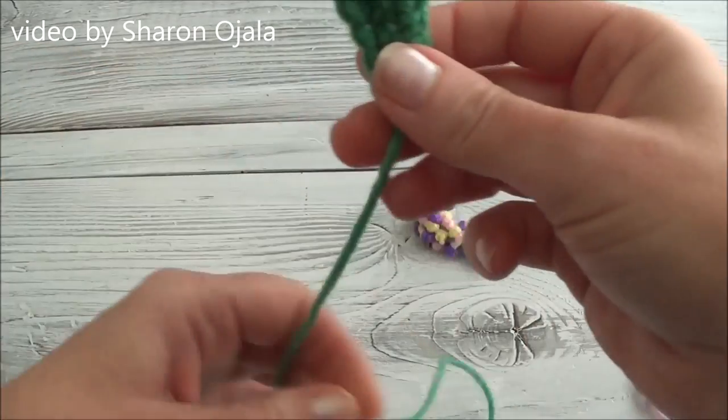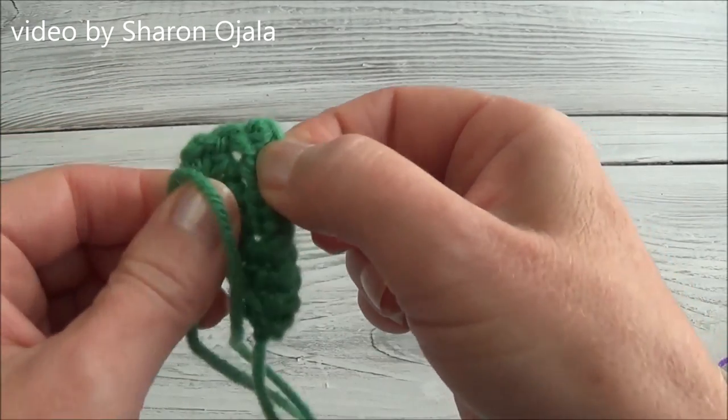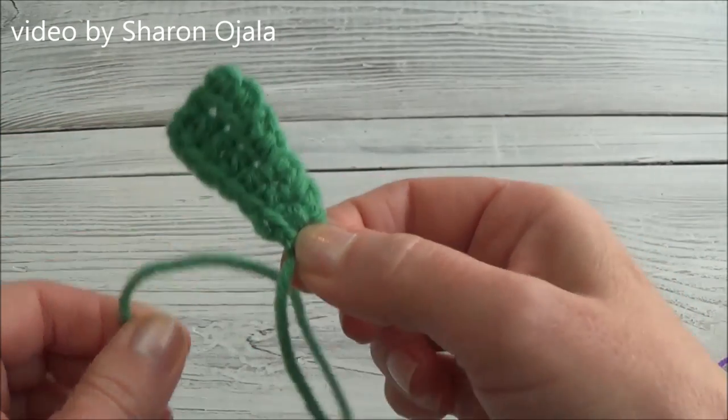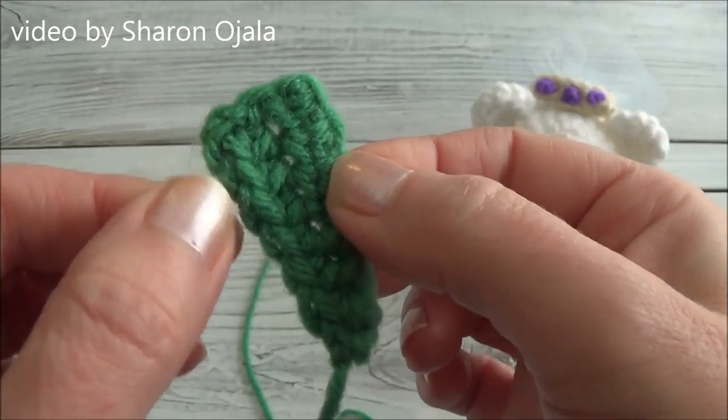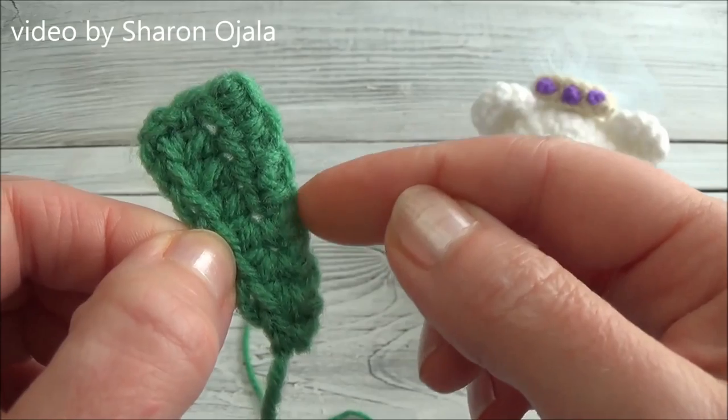I'm going to show you how to make this in a minute. You need some green yarn, and I'm using worsted weight yarn, which would be the best weight to use to make a piece like this. For my friends in the UK, that would be aran yarn, the closest weight to this.